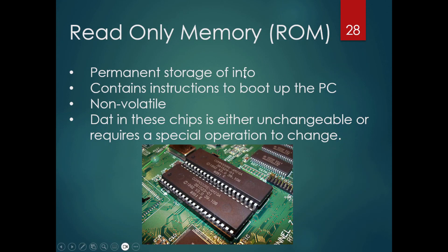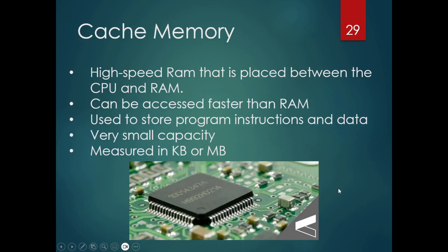ROM (read-only memory) is a permanent area of storage — whatever is stored there stays there permanently. It contains the instructions to boot up the PC. Those instructions must not change each time you switch on, so it's non-volatile, and the chips are either unchangeable or require a special operation to change them. Cache memory is high-speed RAM placed between the CPU and the RAM. It can be accessed faster than regular RAM and stores program instructions and data, but has very small capacity — measured in kilobits or megabytes.